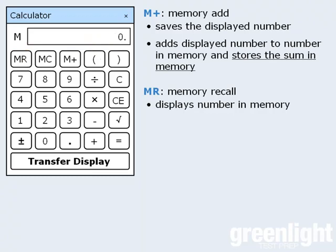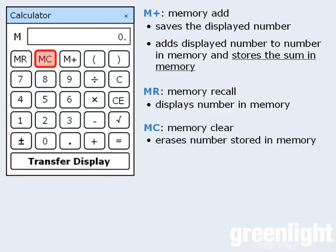The last memory button to discuss is the memory clear button. It erases whatever number is stored in the calculator's memory. So if we click this button, we see that the M that was once here has now disappeared. Also, if we later click the memory recall button, we can see that the 11 that we stored earlier is no longer there. Instead, the display shows a 0, which is the default value when there are no values stored in the memory.